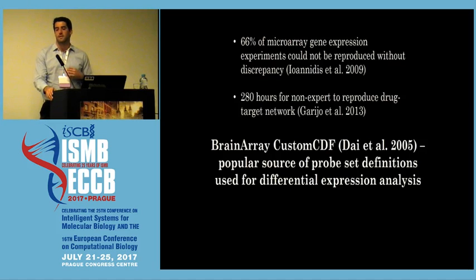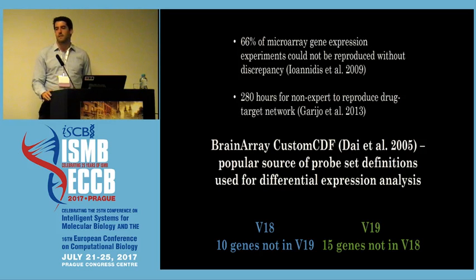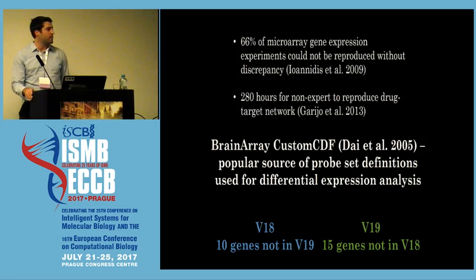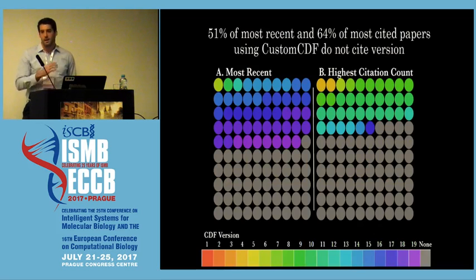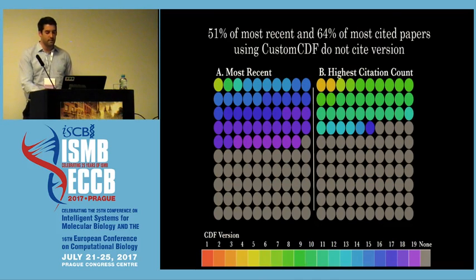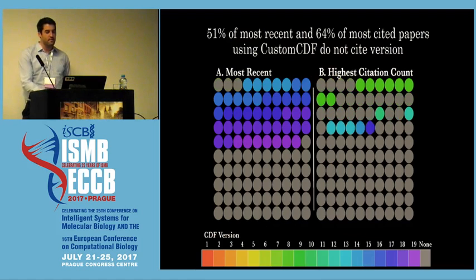We looked at just this one package called Brain Array, which provides custom probeset definition files, and a really simple differential expression analysis. When you use different versions of the software — and they do a good job of updating it almost every year — you find in some cases vastly different numbers of significant genes. A huge problem is that people don't actually cite which version they use. Over half of the most popular and most recent papers don't cite which version of the software they use, and for some of the older versions you actually get a broken page when you try to load it.